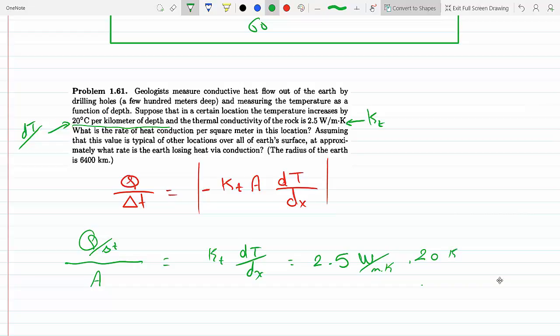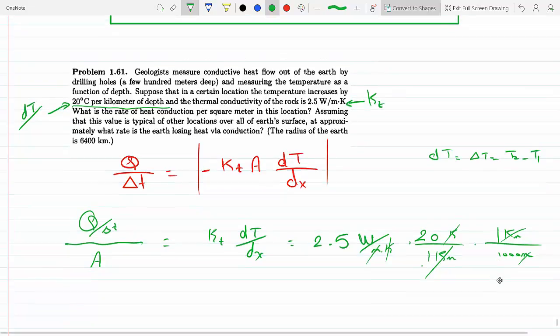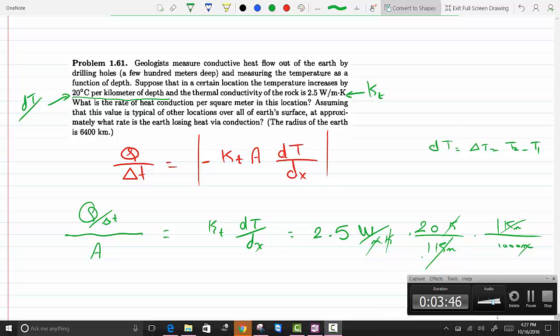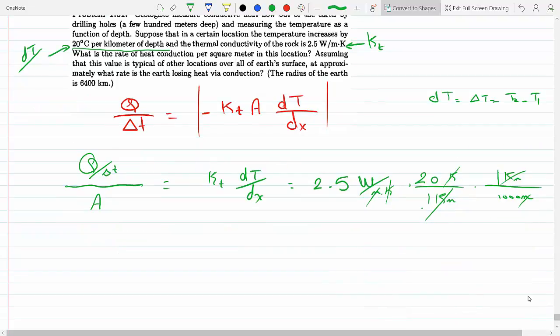20 Kelvin change, because that's just because dT is delta T, which is T2 minus T1. And then this is per meter, or kilometer, one kilometer. We would have to convert this, so every one kilometer is 1,000 meters, so that these guys would go away. Kelvin would cross Kelvin, meters would go with meters, and we would get the answer in watts.